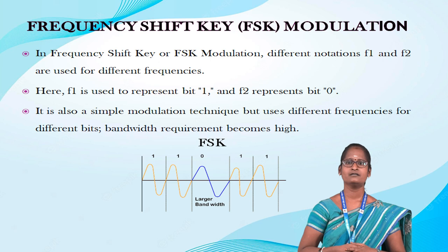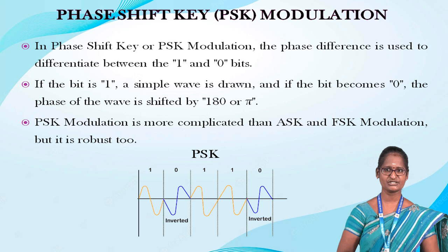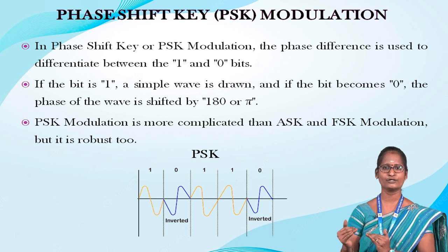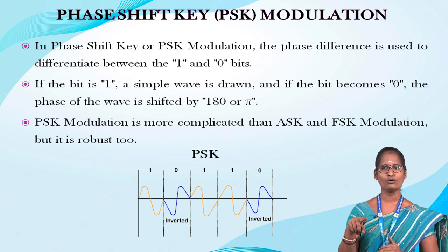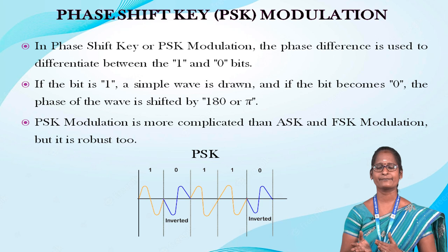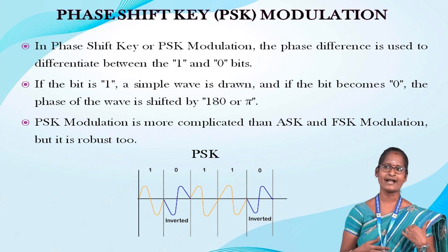The next one is Phase Shift Modulation or PSK. In phase shift modulation, the phase difference is used to differentiate between bit 1 and bit 0. If the bit is 1, a simple wave is drawn. If the bit becomes 0, the phase of the wave is shifted by 180 degrees or pi. PSK modulation is more complicated than ASK and FSK, but it is robust too.